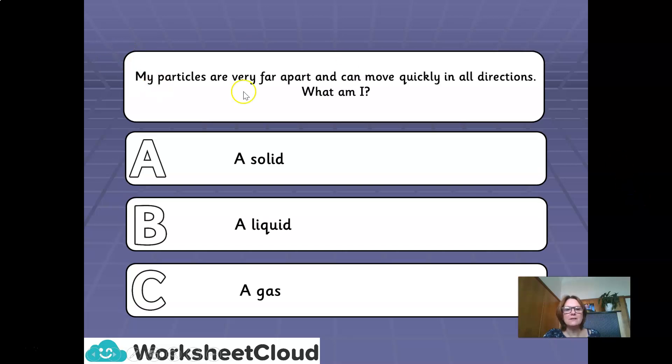My particles are very far apart, and I can move quickly in all directions. What am I? And remember, they are moving. They are far apart. There is lots of space for them to randomly move in all directions. And what else? They can also be easily compressed. Is it A. A solid. B. A liquid. Or C. A gas. Correct answer. It's a gas. C. Well done.